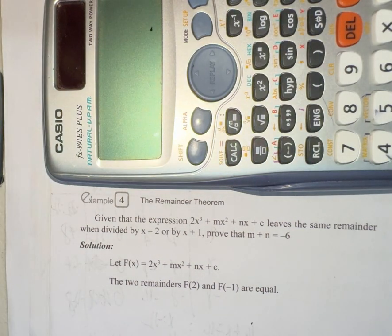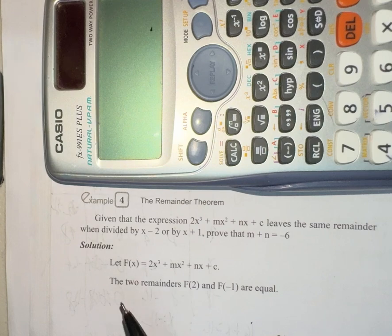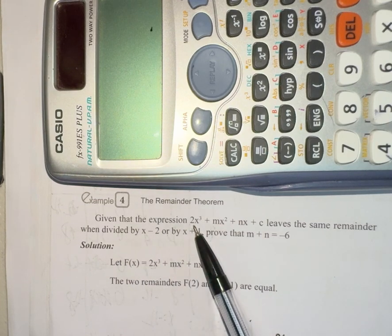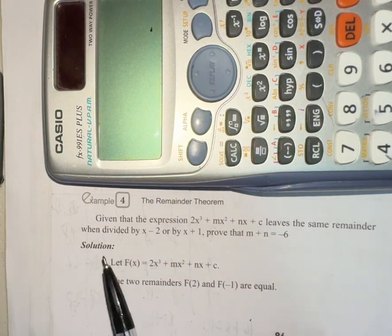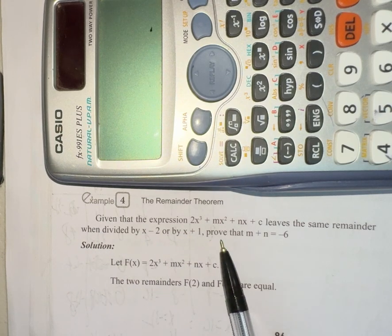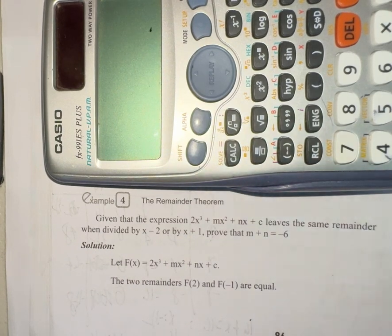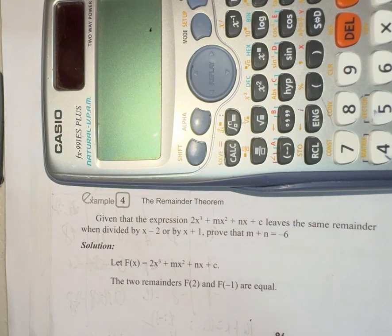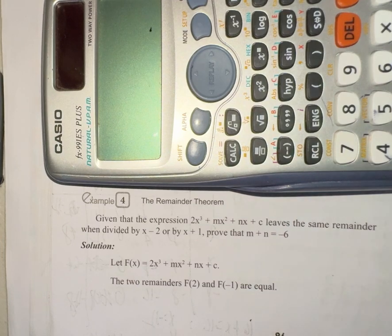Alright, so here's a fun problem we could try, which again involves the remainder theorem. It's from my old math book, but why not? It's for fun. Given that the expression 2x cubed plus mx squared plus nx plus c leaves the same remainder when divided by x minus 2 and x plus 1, prove that m plus n equals negative 6. Typically, these types of problems appear in a college entrance exam test.